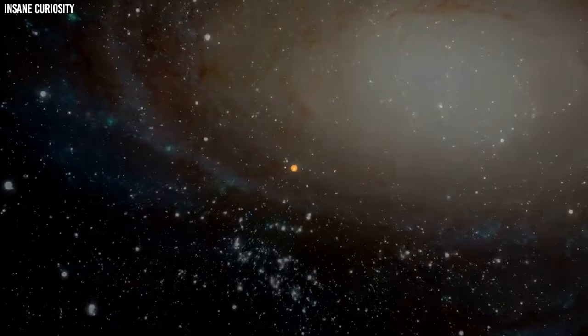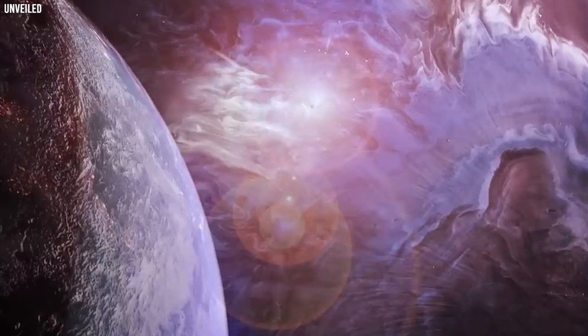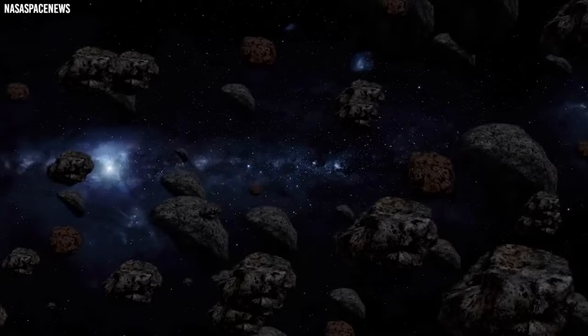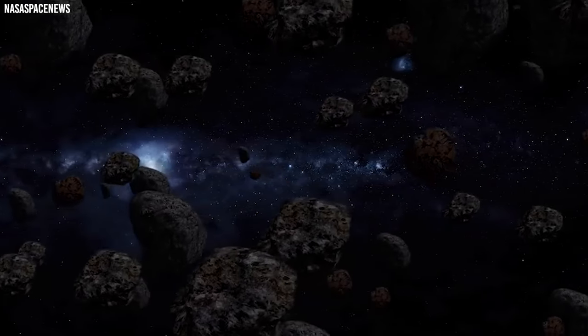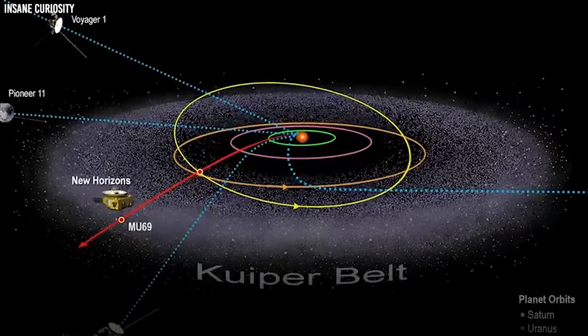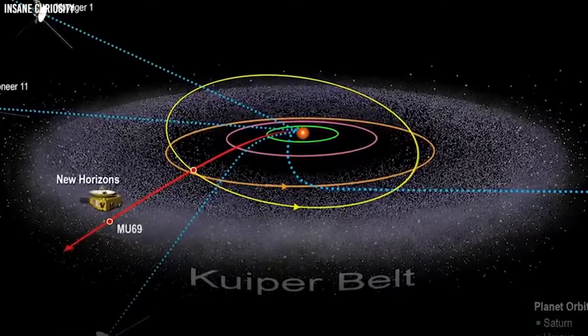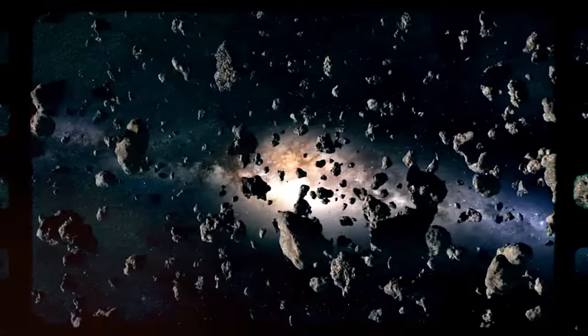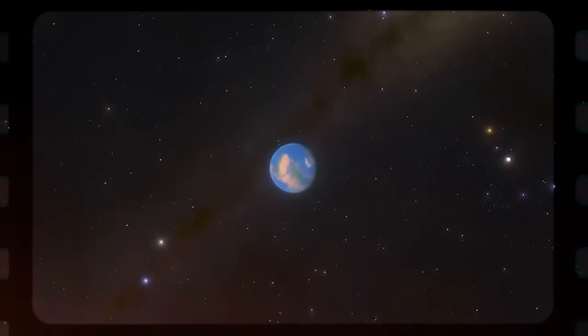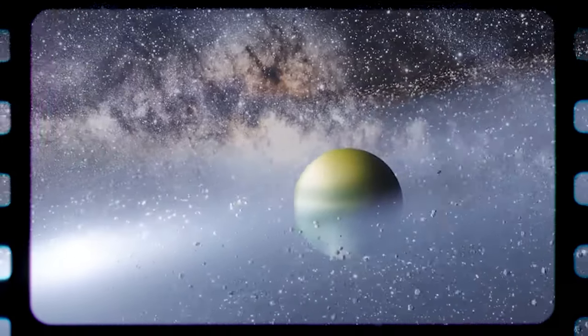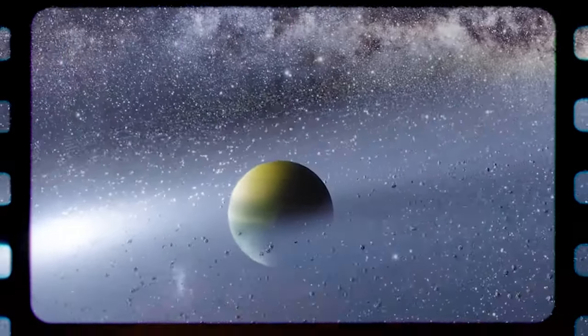Number 7: Resonant KBOs. Resonant Kuiper Belt Objects, KBOs, are intriguing members of the Kuiper Belt, a region of our solar system beyond Neptune populated by icy bodies. These KBOs have a unique relationship with Neptune, as they have a resonance with the planet. This resonance occurs when the orbital periods of these KBOs align in a precise mathematical way to Neptune's orbital period. It's like they're dancing to the same cosmic rhythm. The most famous of these resonances is the 2-to-3 resonance, where the KBO completes two orbits around the Sun when it takes Neptune to complete three. One of the most well-known resonant KBOs is Pluto, which is in a 2-to-3 resonance with Neptune.